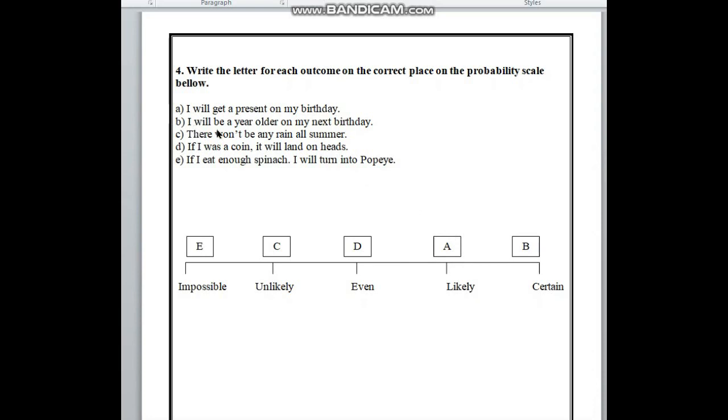In number B here, I will be a year older on my next birthday. And yes, it is certain because in my next birthday, obviously, I will be a year older. So, it will be certain. And above certain, here we have to write B.